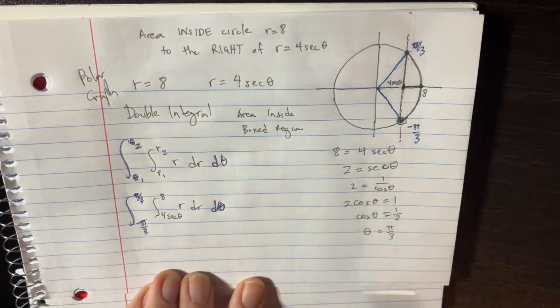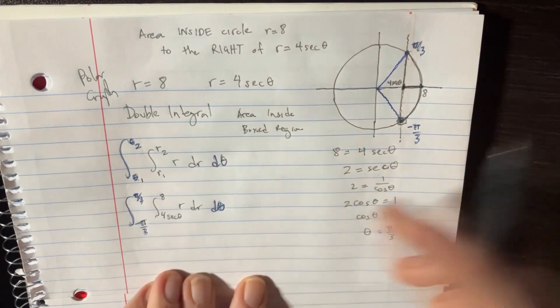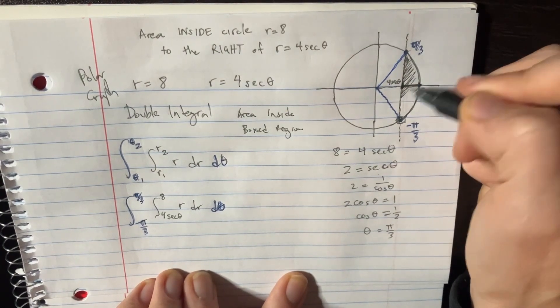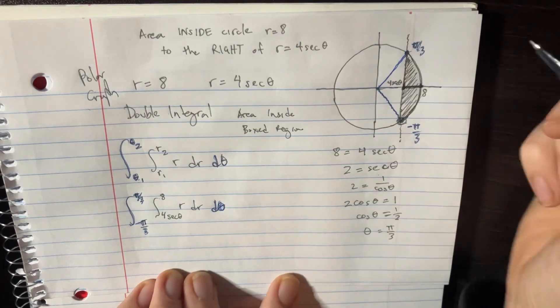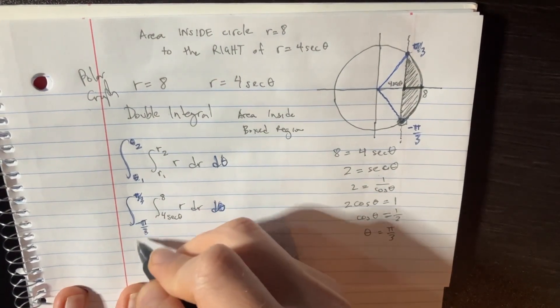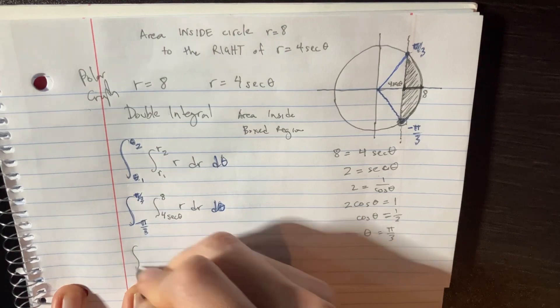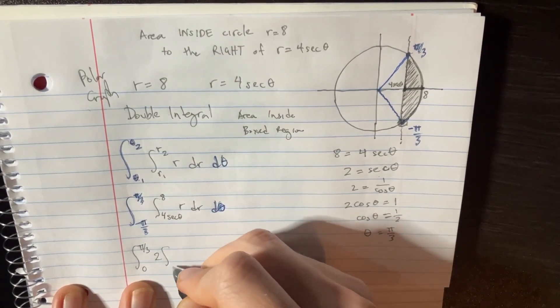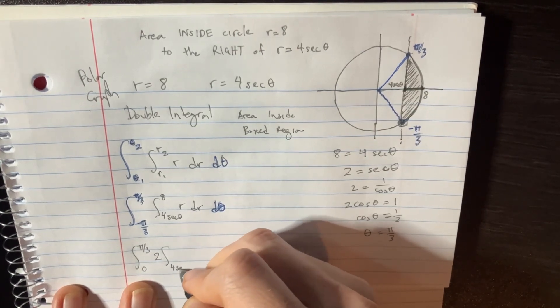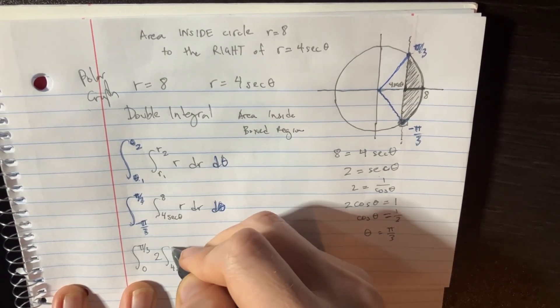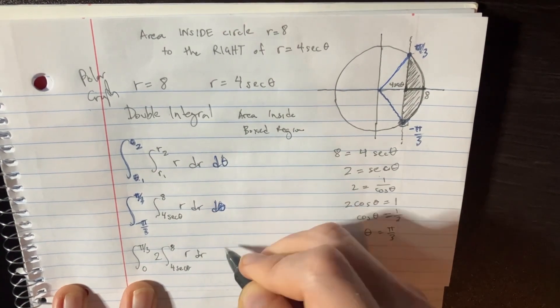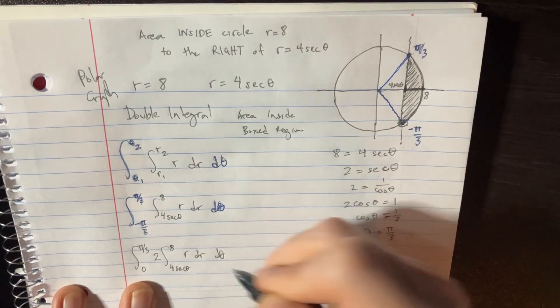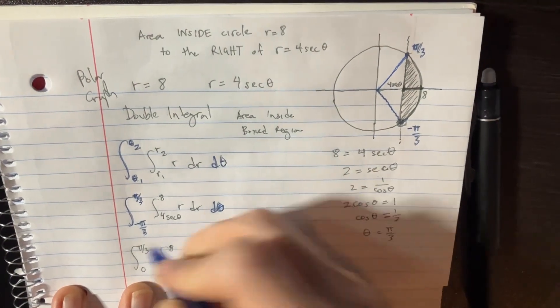Now that's going to give us the whole area from here all the way to there. We don't really need all that, we just need to go halfway, right? Just half of that. We can go from 0 to pi over 3, 0 to pi over 3. We're going to have a 2 because we multiply everything by two. We're just going to leave that for the middle part though. 4 secant theta to 8 of r dr and then d theta. Okay, we are going to try to solve it over here now.